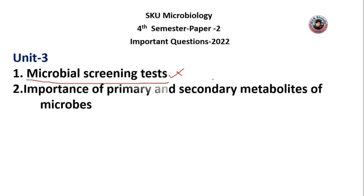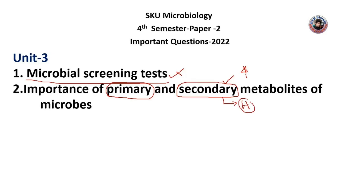The next important question is the importance of primary and secondary metabolites of microbes. Primary and secondary metabolites are very important for microorganisms to produce. Secondary metabolites are produced under unfavorable growth conditions and are important for human use.